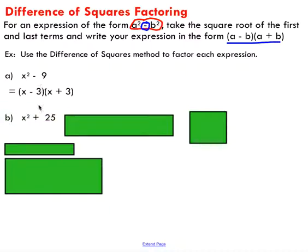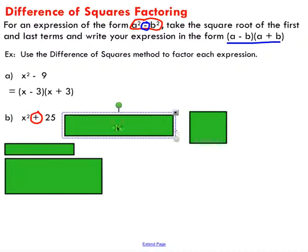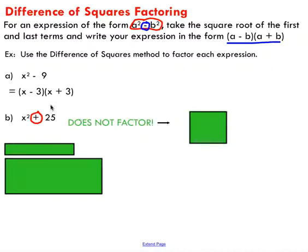Second example. Taking a look at this, the first thing that jumps out is the fact that this is an addition sign. We do have two terms, so it does appear to be a difference of squares, but you have to remember that there is no difference here. This isn't a sum of squares — there is no sum of squares factoring method. So whenever you see something like this, whoever's giving you this problem is trying to trick you. This thing does not factor.